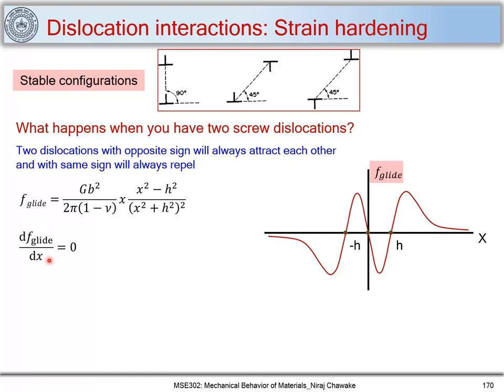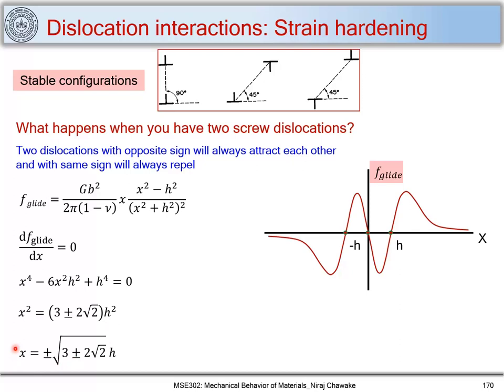Differentiating and setting equal to zero gives the equation x⁴ − 6x²h² + h⁴ = 0. Solving for the roots: x² = (3 ± 2√2)h², and therefore x = ±√(3 ± 2√2) · h. This gives four roots corresponding to two minima and two maxima in the glide force variation.